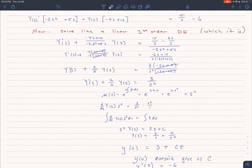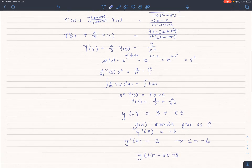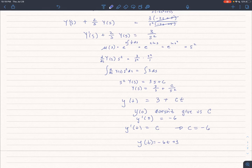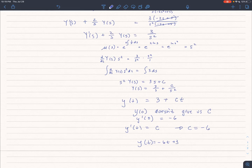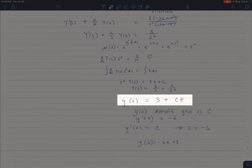We find our integration factor, and then we go ahead and solve this linear differential equation. And we find that y(s) is equal to 3 over s plus c over s squared. And if we do the inverse Laplace transform of that, we get that y(t) is 3 plus ct.